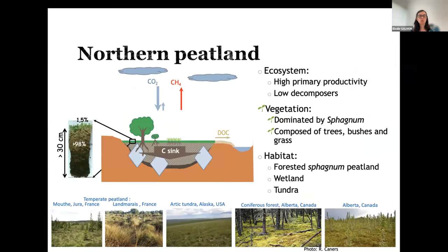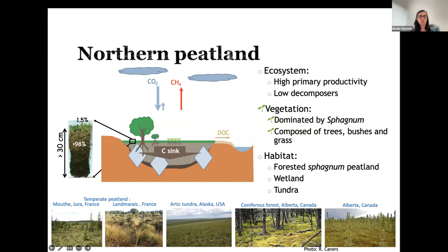To give you a better picture of those peatlands: they are highly productive and they accumulate a lot of carbon in the soil. Because the decomposition of the carbon is very slow, their ecosystem is dominated by Sphagnum, and as you can see here in those pictures, they can be covered with very diverse vegetation — from trees, bushes, or grass.